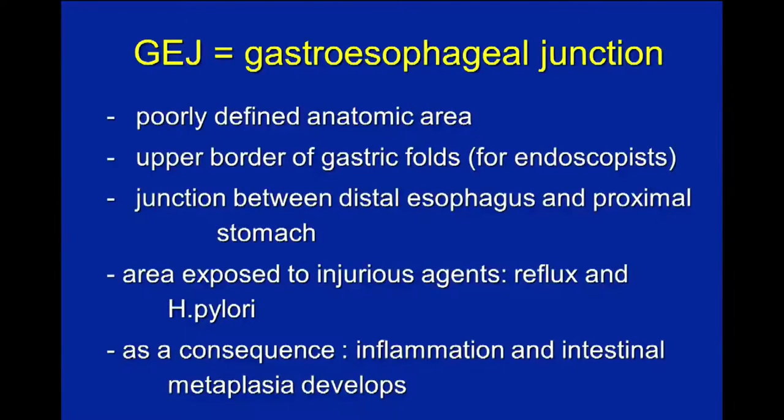The gastroesophageal junction is a poorly defined area. In fact, nobody knows exactly where it is. For the purpose of this talk, it is approximately one centimeter above the gastric folds visible during endoscopy and one centimeter below the upper border of gastric folds. So this is the gastroesophageal junction.